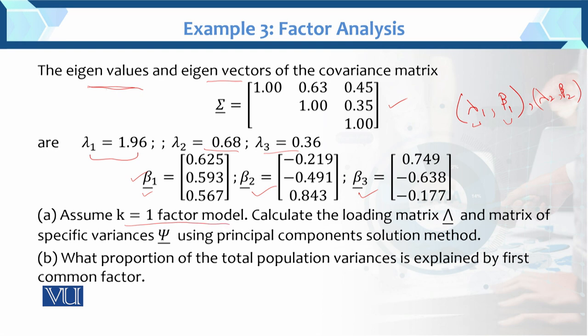We need to find the one-factor solution. Calculate the loading matrix Lambda and the matrix of specific variance Psi using the principal component solution method. Our task is to find the loading matrix and specific variance Psi using the principal component analysis method. Previously, we did not use eigenvalues and eigenvectors, but now we are using principal component analysis to solve this.